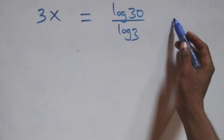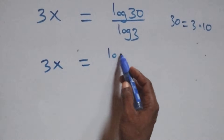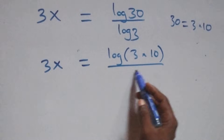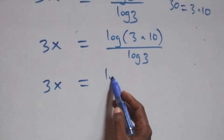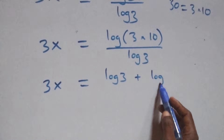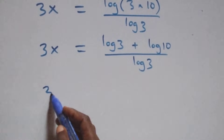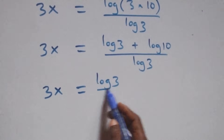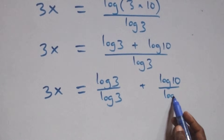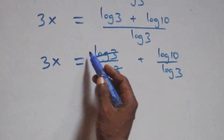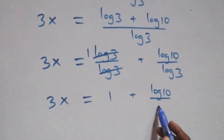In the next step, 30 can be written as 3 times 10, so we have 3x equals log of 3 times 10 over log 3. This follows the log rule: 3x equals log 3 plus log 10 over log 3. Then log 3 cancels, leaving 3x equals 1 plus log 10 over log 3.